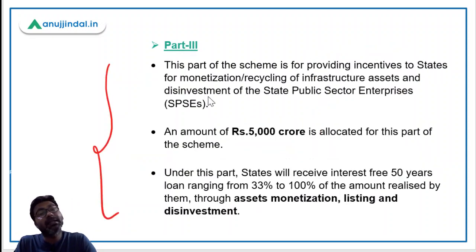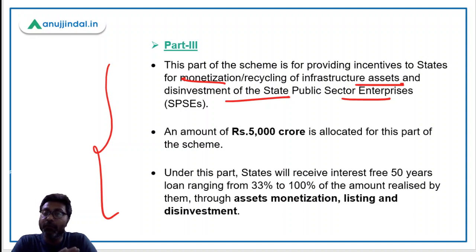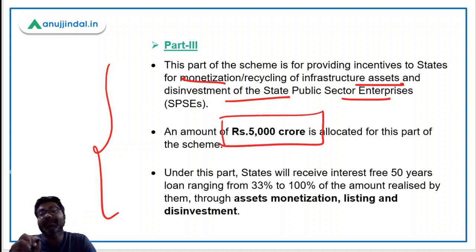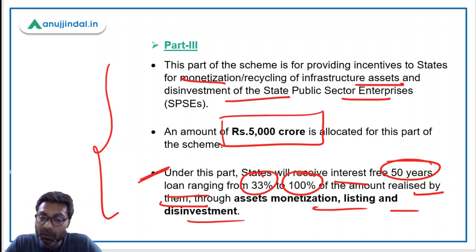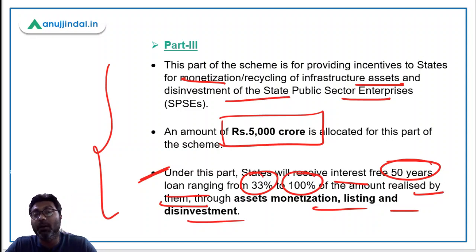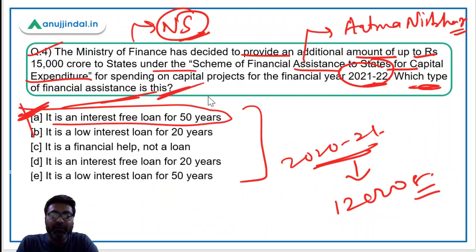Part three is for monetization of infrastructure assets and disinvestment of state public sector enterprises. For this part, rupees 5,000 crore has been allocated by the Ministry of Finance. States will receive interest-free 50-year loans ranging from 33% to 100% of the amount realized by the states through asset monetization, listing and disinvestment. Coming back to the question: which type of financial assistance is this? It is an interest-free loan for a period of 50 years, so Option A is the correct answer.